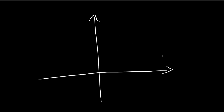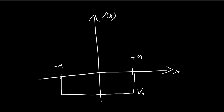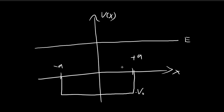Now we're going to move on to the scattering states. The setup is the finite square well from negative A to positive A. Previously we were focusing on the bound states, which correspond to the case where the energy level is below zero. Once the energy level reaches above zero, you get the scattering states, because as x tends towards positive and negative infinity the energy level is larger than the potential — outside the well the potential is just zero.